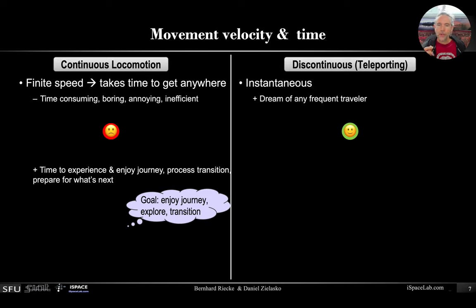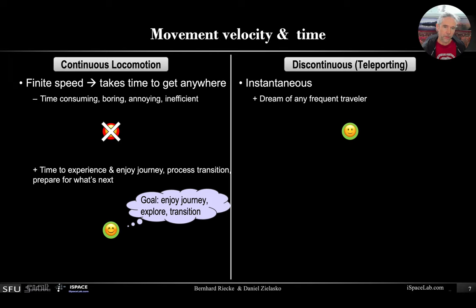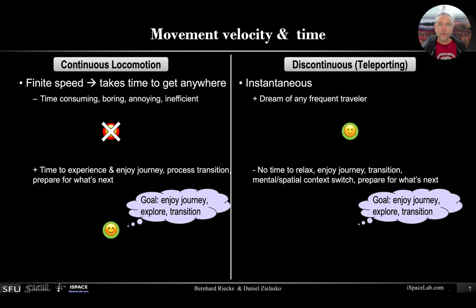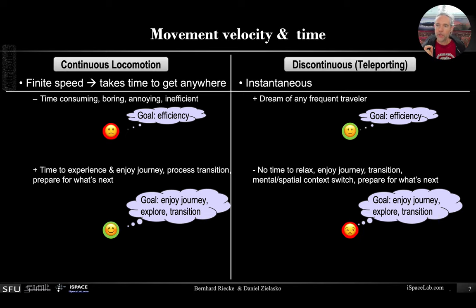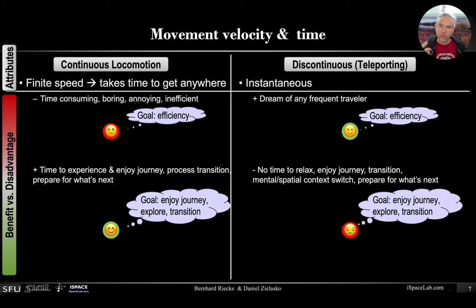We would like to argue that whether something is an advantage or disadvantage really depends on your goal. In the context of movement time and velocity, if the goal is to enjoy the journey, to explore, to really process the transition to the new environment, and to have time to think and prepare for what's upcoming, then continuous locomotion might actually be more suitable. Whereas teleporting might not give you this time to relax, enjoy the journey, or switch the mental spatial context. If the goal is efficiency, then this pattern can be reversed. We propose distinguishing between the actual attributes of an interface and whether they are a benefit or disadvantage, because it really depends on the goal of the simulation.